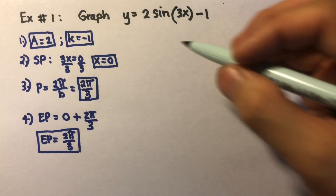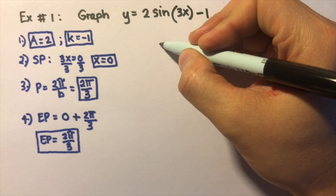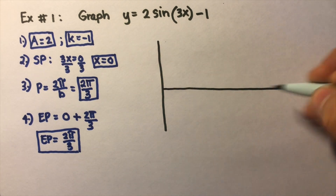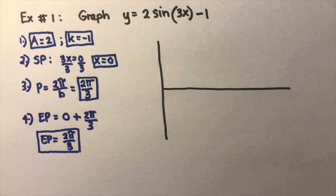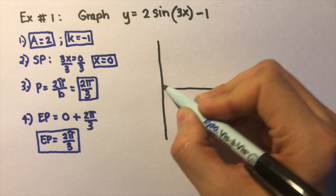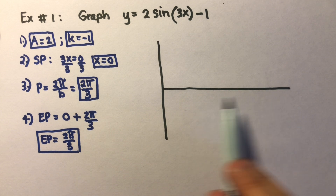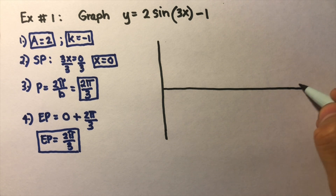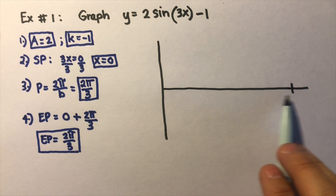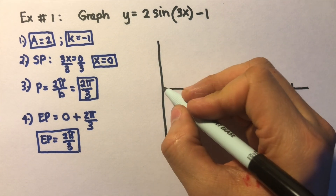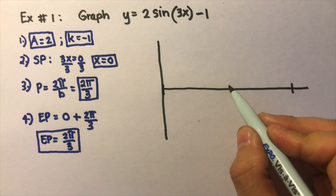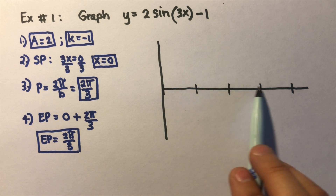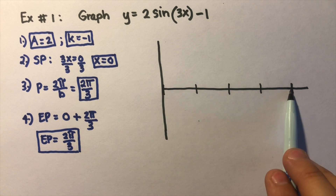We're now ready to sketch the graph. First, we draw the x and y axes. Then we label five points — there should always be five points. I'm dividing the cycle into five: the starting point, the endpoint, and three equally spaced midpoints between them. So that's one, two, three, four, five points — starting point and endpoint.